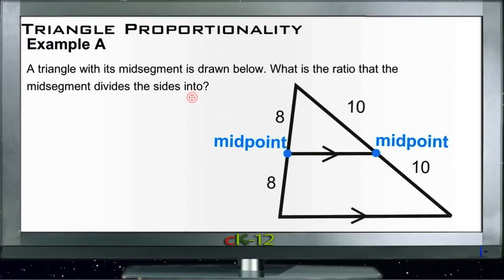All right, here are our examples for triangle proportionality. Example A says that there's a triangle with its midsegment drawn below, and we're supposed to find out what the ratio that the midsegment divides the sides into would be. So here's the three sides of our triangle, and our midpoints are marked in blue, now in orange.